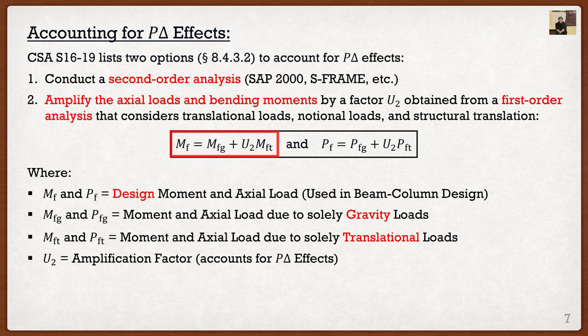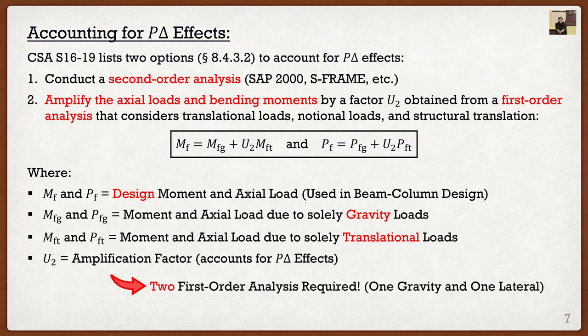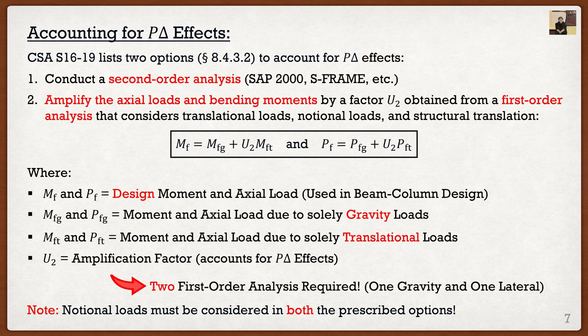M_FT and P_FT are the moment and axial load from a first order analysis applying only translational loads. Both equations include the U2 factor, which is the amplification factor accounting for p-delta effects. All in all we actually have to do two first order analyses — one for gravity loads and one for lateral loads. An important thing to keep in mind: no matter which option you pick — second order analysis or first order with U2 amplification — you always have to include the notional loads. A common mistake is if students opt to do a second order analysis they do not add notional loads, thinking they're related to second order effects. They're not — notional loads are on the uncertainty side of things.